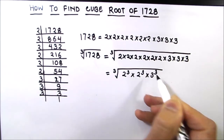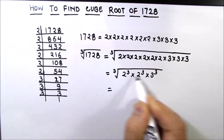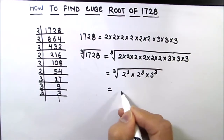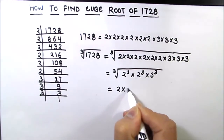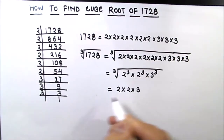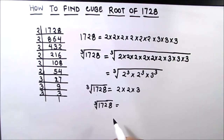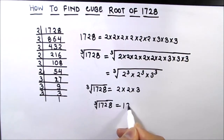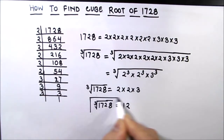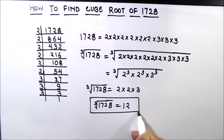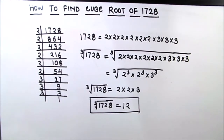Since these are all perfect cubes, the cube root of a cubic number is the number itself. So this is 2 times 2 times 3, and the cube root of 1728 is 12. This is our final answer — we will box the answer. I hope this video is helpful to you. If you like the video, please hit the like button and subscribe to my channel for more math videos. Thanks for watching.